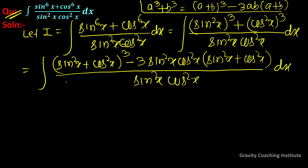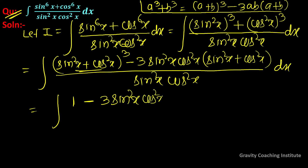And sin²x + cos²x का formula होता है 1, so यह होगा 1³ = 1, और यह 3sin²x·cos²x, और इसकी value भी 1 हो जाएगी, upon sin²x · cos²x dx.